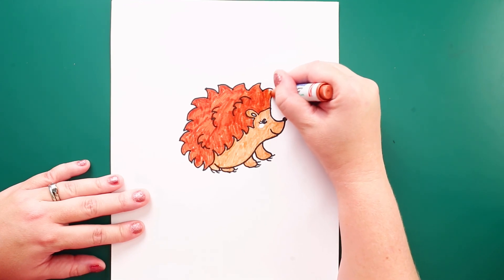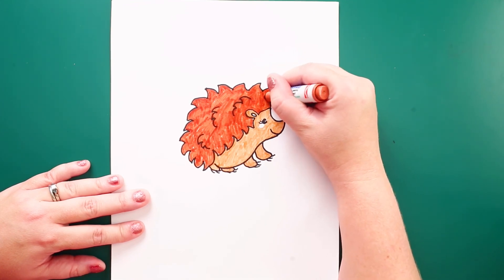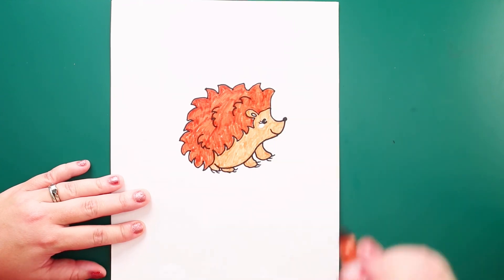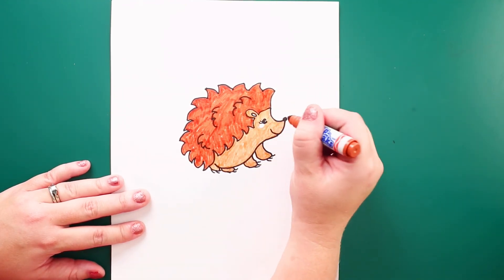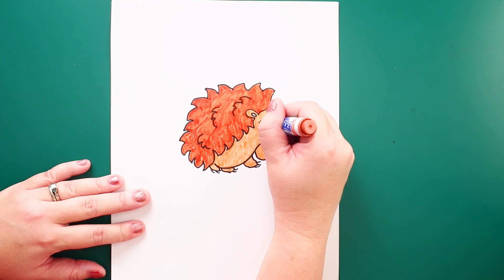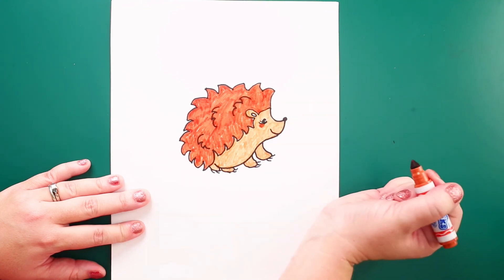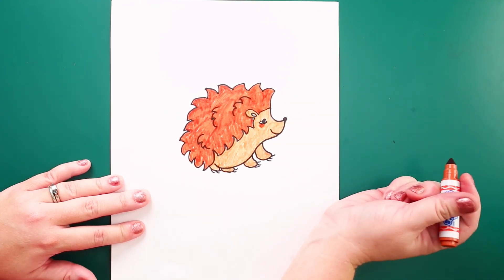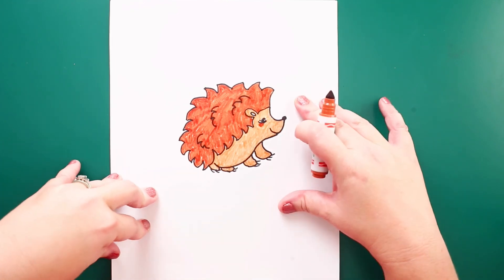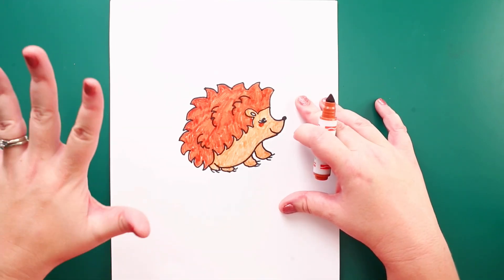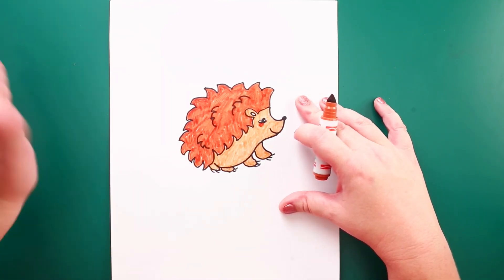She's almost done, guys. Wow. So, I left this little circle on her cheek. I'm going to use the darker brown kind of rusty color to do a little blush right there. She's cute. All right. So, this was Harriet the Hedgehog. I hope you guys had fun. Happy Thanksgiving weekend. Bye.